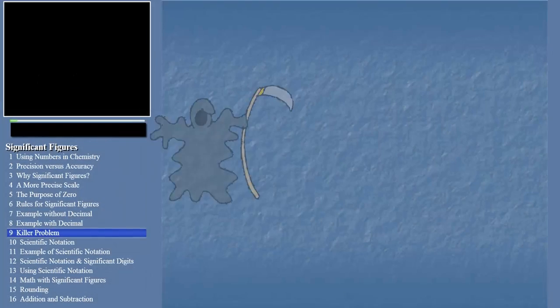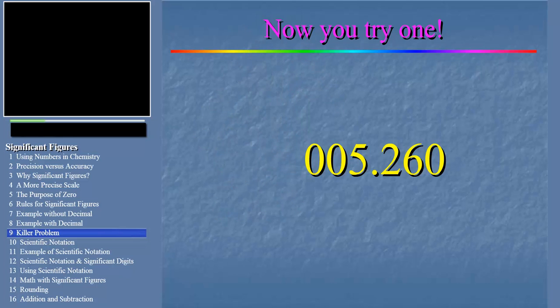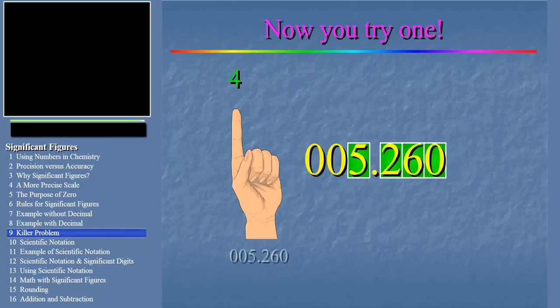Okay, here's a killer. Actually, it's not that bad. Take a second and try this one on your own. Well, let's find out how you did. Did you get four significant digits? Fantastic. Remember, you start at the first non-zero digit and include the last zero in the number since there is a decimal point. So we have one, two, three, four. Four significant digits.